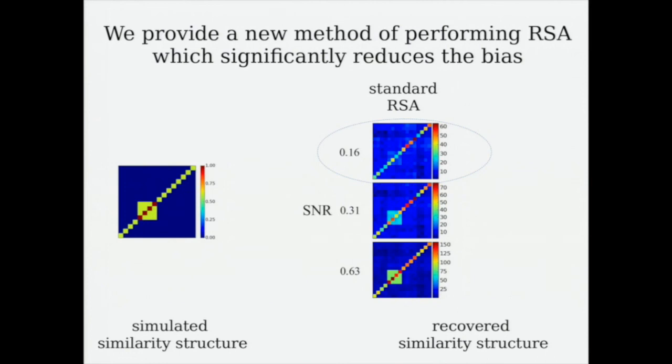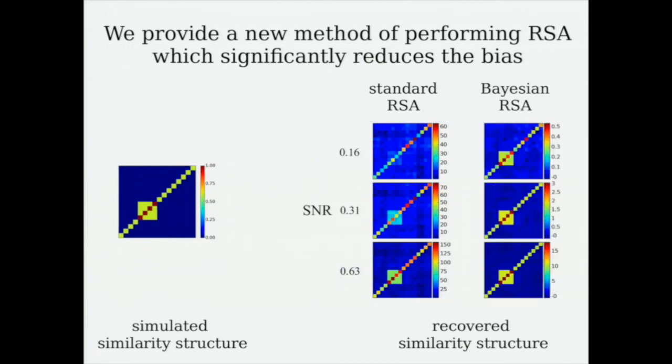When the signal-to-noise ratio is low, the yellow box is barely visible in the standard method. But in our method, the yellow box can be clearly seen across different signal-to-noise ratios.